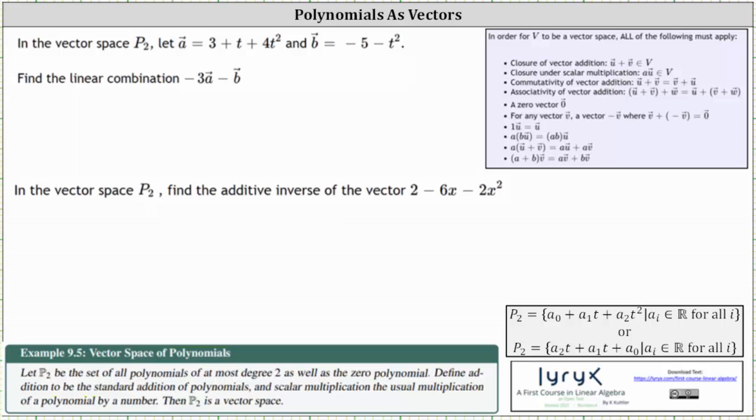In vector space P2, let vector a equal 3 + t + 4t², and vector b equal -5 - t². Notice here we're told P2 is a vector space, and therefore the five axioms of addition and five axioms of scalar multiplication, shown here in the upper right-hand corner, all hold true.